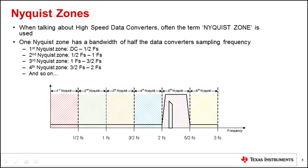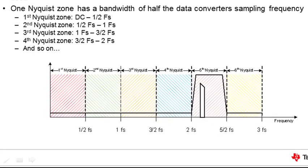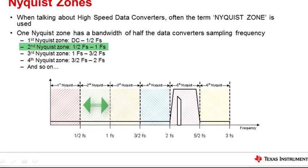When talking about high-speed data converters, often the term Nyquist zone is used. The frequency spectrum of an ADC is divided into different zones based on the sampling frequency. Each Nyquist zone has bandwidth of half the data converter sampling rate. As shown in the figure, first Nyquist zone is from DC to FS over 2 and second Nyquist zone is from FS over 2 to FS and so on.